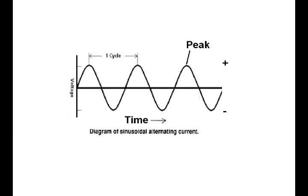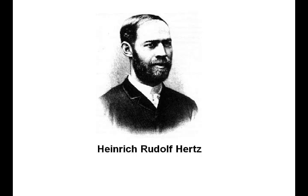The distance from one peak to the next peak, one trough to the next trough, or any given point on a repeating waveform to that same equivalent point again, is considered one cycle. In the United States we have 60-cycle AC, meaning 60 of these cycles occur in one second. This is called hertz, named after Heinrich Hertz — 60 cycles per second equals 60 hertz. In Europe, their power is 50 hertz.